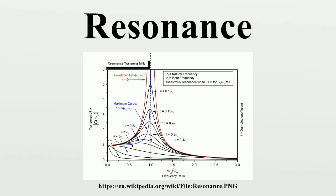It is the mechanism by which virtually all sinusoidal waves and vibrations are generated. Many sounds we hear, such as when hard objects of metal, glass, or wood are struck, are caused by brief resonant vibrations in the object. Light and other short-wavelength electromagnetic radiation is produced by resonance on an atomic scale, such as electrons in atoms.